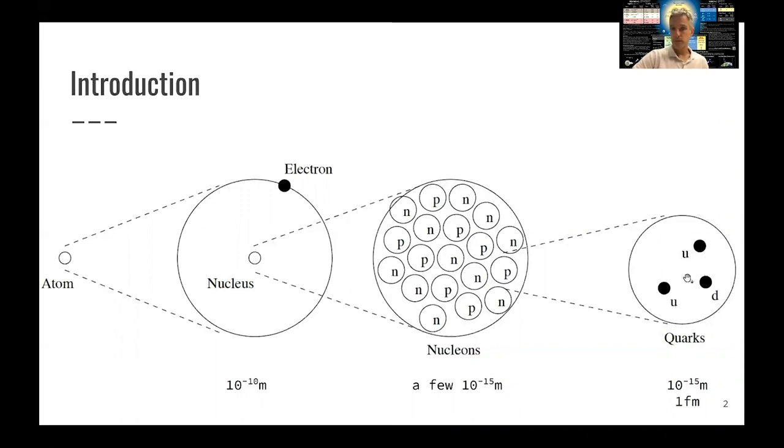A proton, for example, as depicted here, has three components or three constituents, two up quarks and one down quark. A neutron, then, is built out of one down quark and two up quarks.